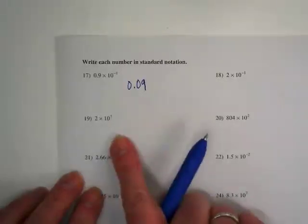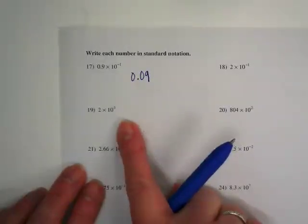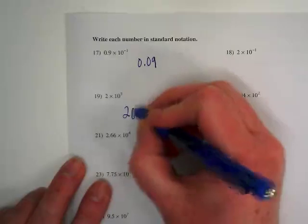Let's go down and do number 19 because it's positive and that's different from this one. We're going to move to the right. How many places? Five. Which means we're going to add five zeros.